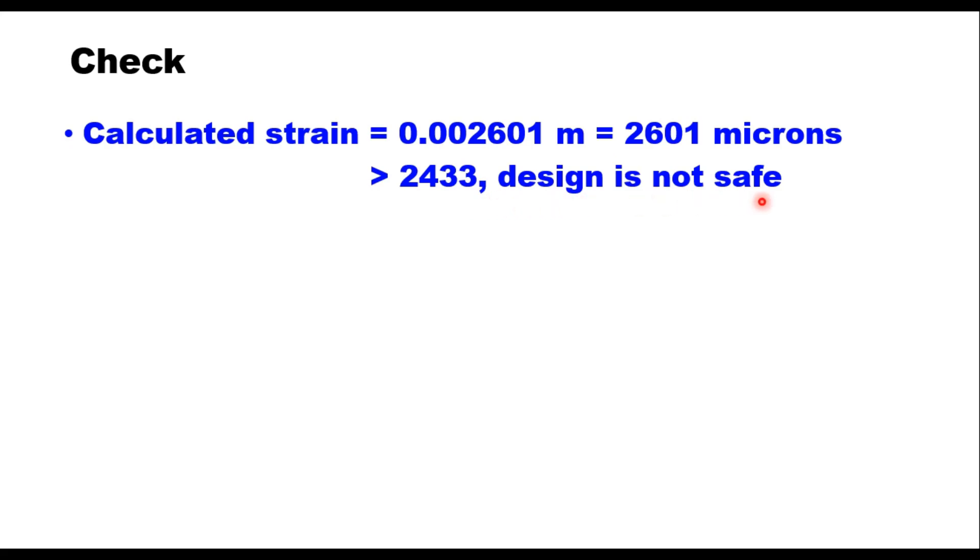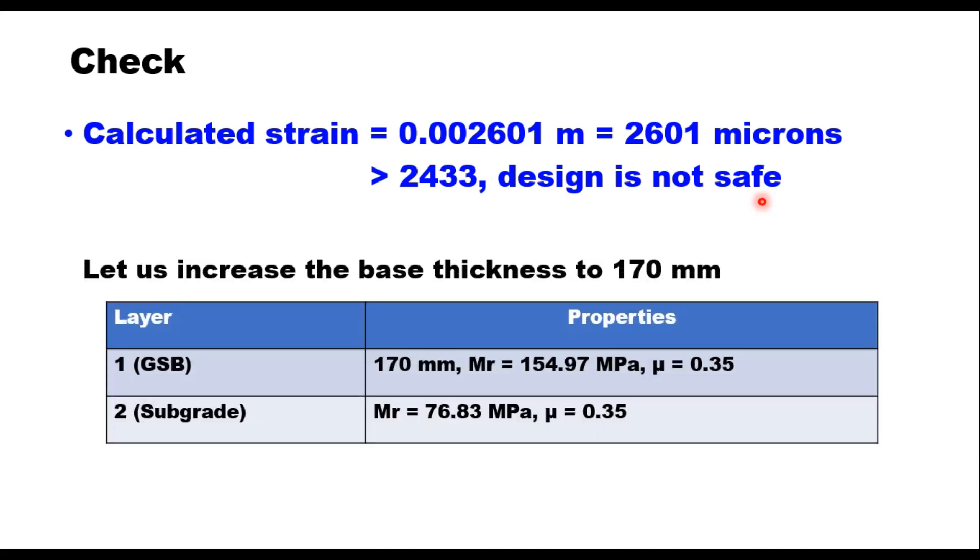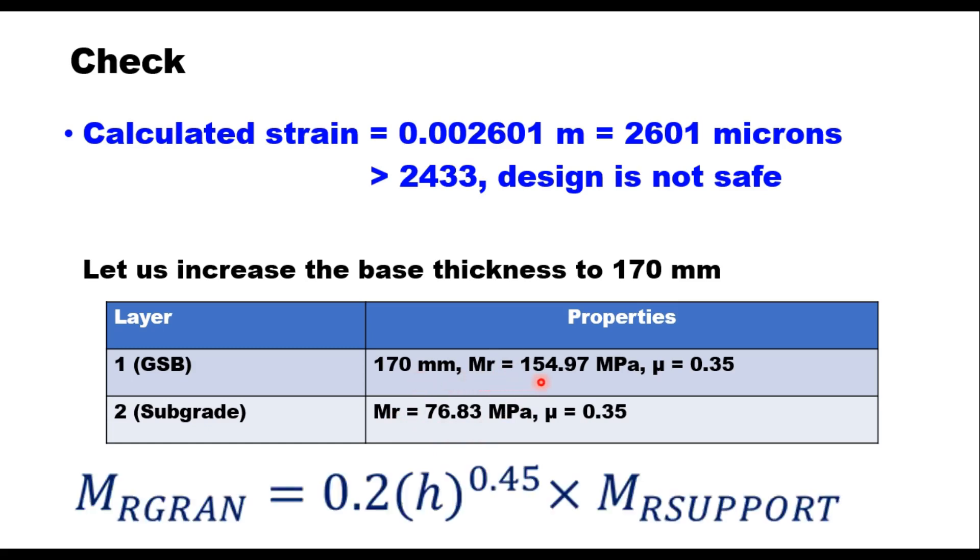Let us now increase the thickness of the subbase to 170 millimeter. So properties now changed: the GSB layer has a thickness of 170 millimeter now. And if you recalculate Mr value, Mr for support will be same 76.83, but because h has changed now, so Mr for GSB will change, that is 0.2 into h power 0.45 into Mr support. So h is now 170, Mr becomes 154.97, mu remains same. Other parameters also remain same: that is single wheel load of 20,000 Newton, tire pressure 0.56 MPa, and dual wheel assembly. You again move to IITPAVE software and find out what is the critical strain.